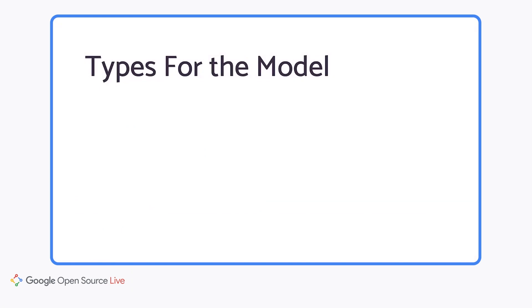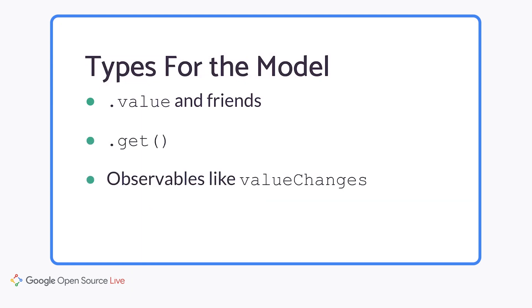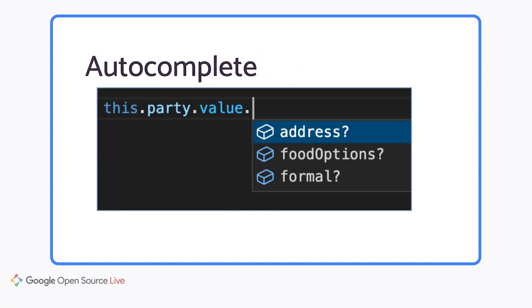The new types affect the entire model API surface, including ordinary values and sub-values, calling .get on inter-nested controls, the observables used for state management, and all the rest of the model API. One of the big benefits as well is autocomplete. Now that all the fields on a form group are known statically, your editor can complete them. And that's a huge help when you're dealing with deeply nested or complex forms.